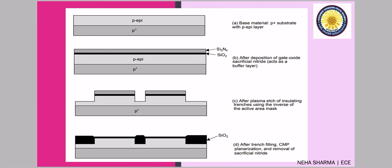Now we look at the detailed version of the flowchart. In the first step, the base material — a P+ substrate with an epitaxial layer — is taken. The process starts with a P substrate surfaced with a lightly doped P epitaxial layer. This epitaxial layer is used to obtain a very pure form of the P layer. On it, a thin layer of gate oxide and a sacrificial silicon nitride layer are grown, as seen in figure B.